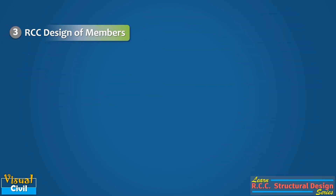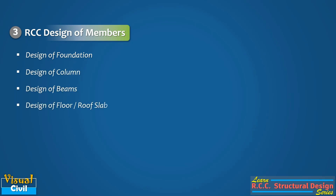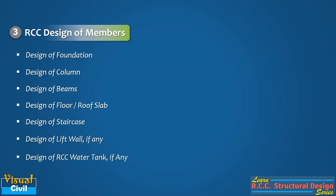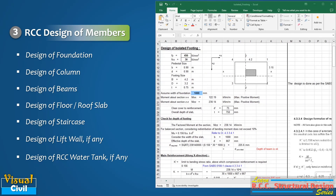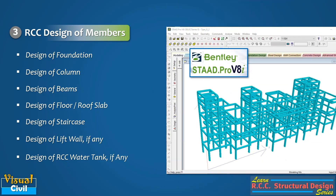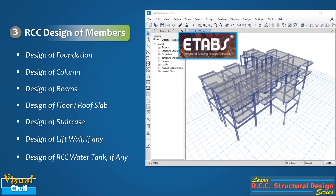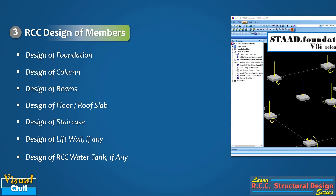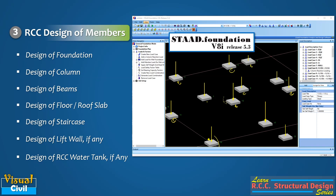The third step involved in the structural design process is RCC design of the members. This generally includes design of foundation, column, beam, floor and roof slab, staircase, concrete wall for the lift, and RCC water tank if available, along with any other special members. The design of these elements can be performed by manual computation, spreadsheet, or commercial structural analysis and design programs like STAAD Pro, ETABS, SAFE, and STAAD Foundation. Many times, designers prefer their own developed spreadsheets for RCC design.